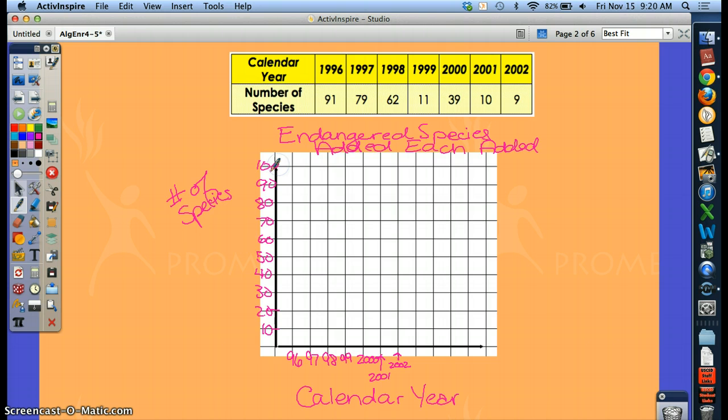So when you graph these points, just graph them as an ordered pair. In 1996, it was at 91. In 1997, it was at 79. In 98, 62. 99, 11. Low year there. 2000, it was 39. 2001, it was... Sorry, we made these changes. This is actually 38. And this is 23. So 2001, it's 38. And 2002, it's 23.